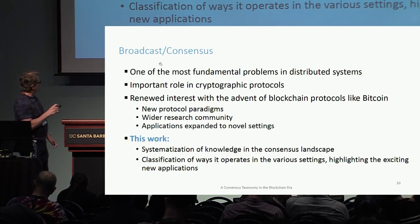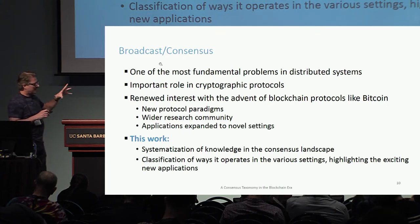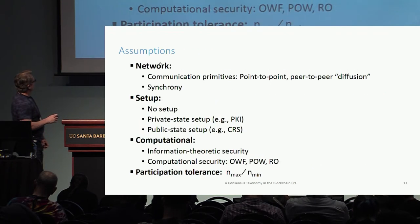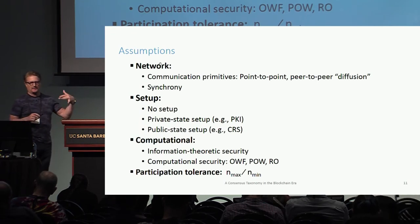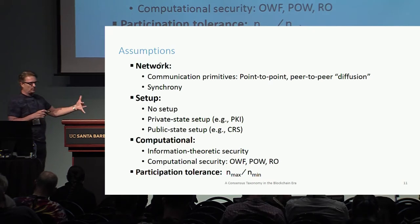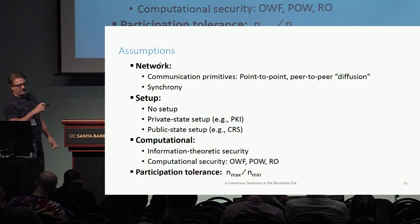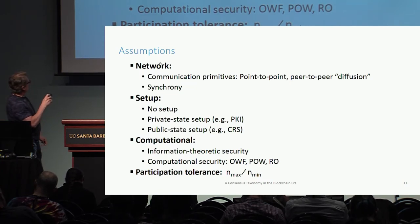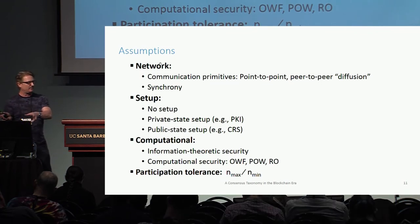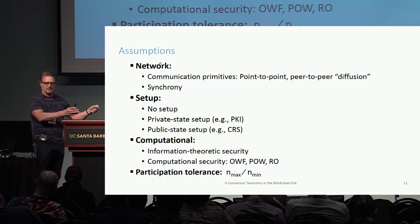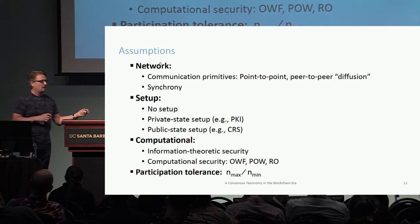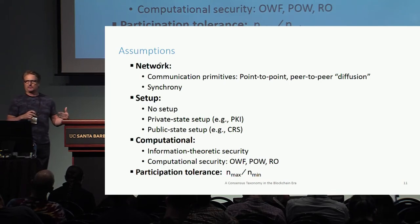What we do in this work is systematize what's going on in the ecosystem landscape and classify it according to what was done classically versus what is done in the blockchain space. We classify by assumptions and resources that protocols make use of: from a network point of view, point-to-point (classical) versus peer-to-peer diffusion (blockchain); what kind of setup — no setup, public-state setup like a CRS or genesis block, or private-state setup like a PKI; and computationally, what security guarantees we have — information-theoretic versus computational — and what primitives are used, like one-way functions, proofs-of-work, and random oracles.